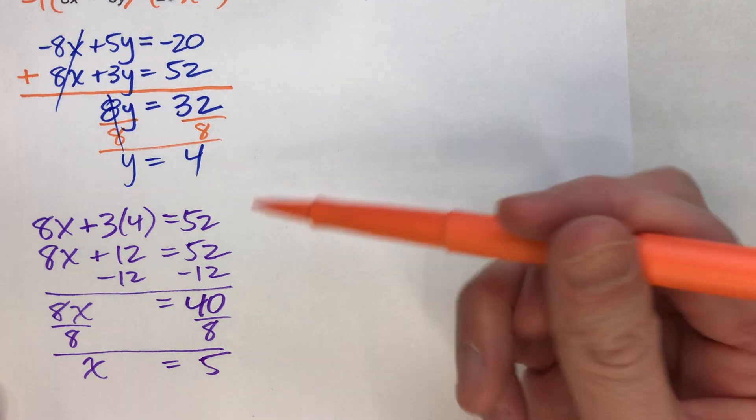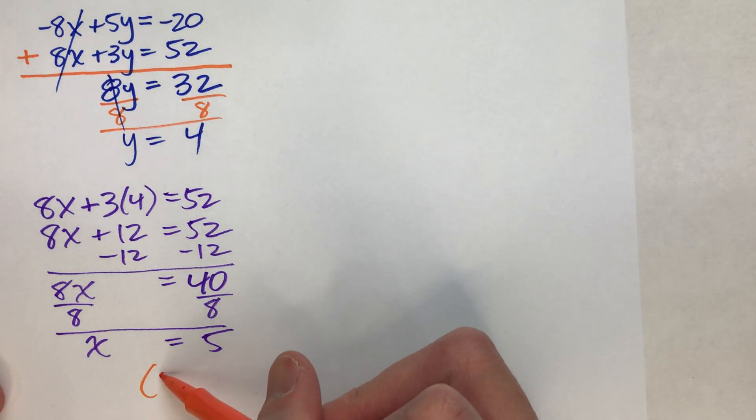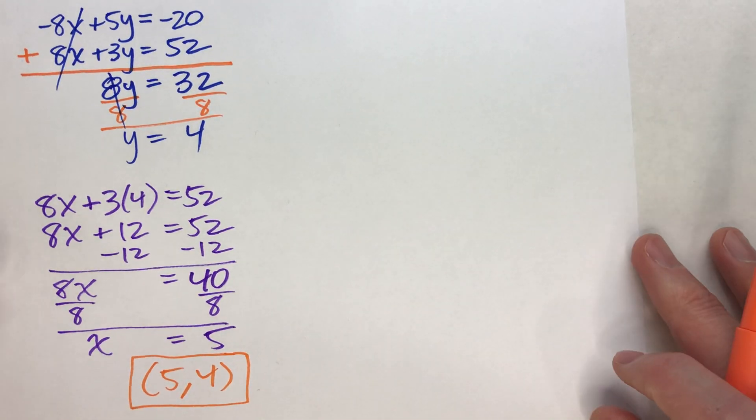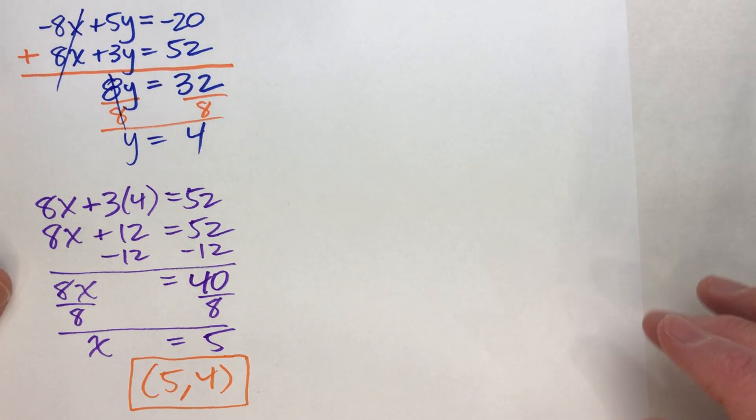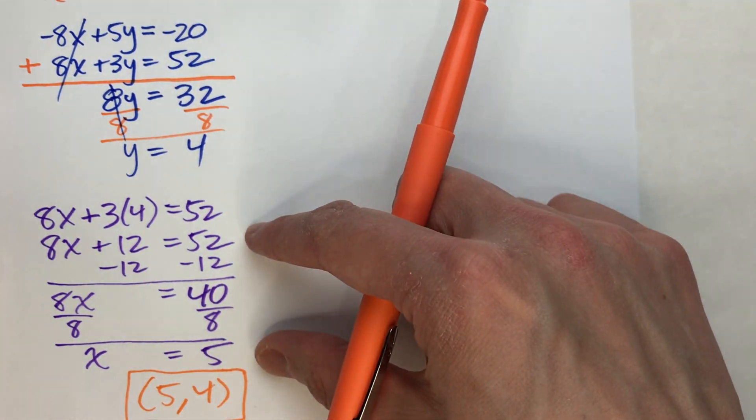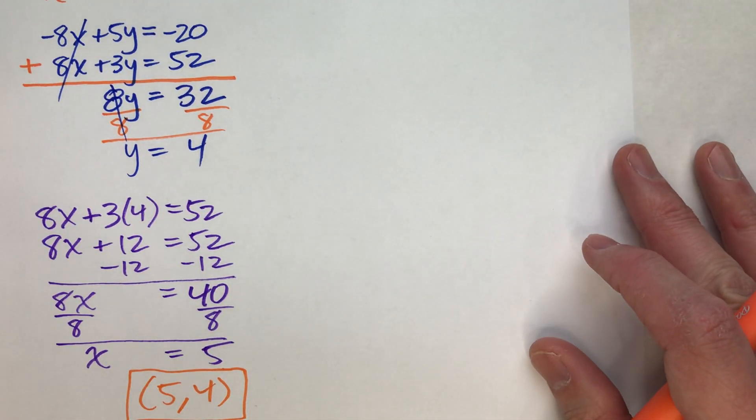And now I know my solution. x is 5, y is 4. There it is. So we do have to solve two little algebra equations. But neither of them are particularly difficult. Let's do one more example.